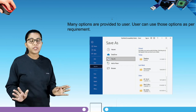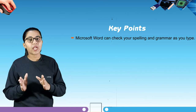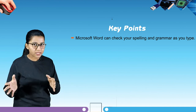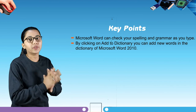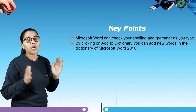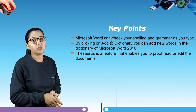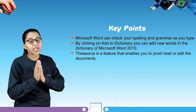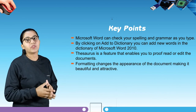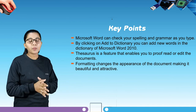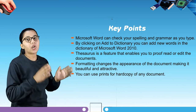Now let's have a quick look at some key points from this chapter. Microsoft Word can check your spelling and grammar as you type. By clicking Add to Dictionary, you can add new words to the dictionary of Microsoft Word 2010. The Thesaurus is a feature that enables you to proofread and edit the document. Formatting changes the appearance of the document, making it beautiful and attractive. You can use Print to get a hard copy of any document.